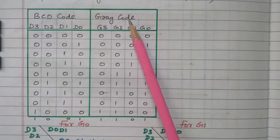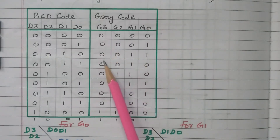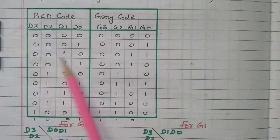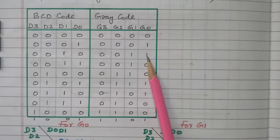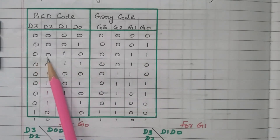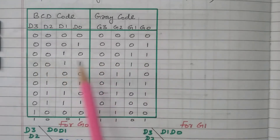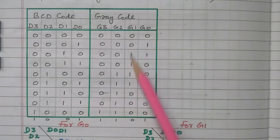For example, BCD 0 0 1 0 is converted: 0 is written as it is; 0 XOR 0 is 0; 0 XOR 1 gives 1 (different); 1 XOR 0 gives 1 (different). So BCD 0 0 1 0 gives gray code 0 0 1 1. Like that, all other codes are converted. We now have the complete truth table with values of G0, G1, G2, and G3.